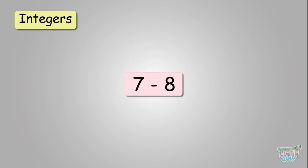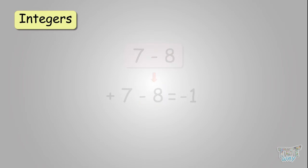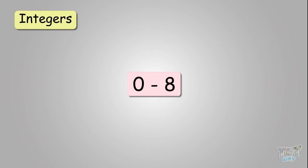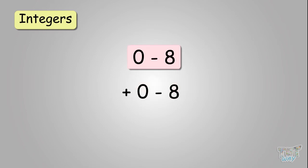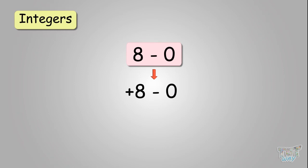Seven minus eight — this is positive seven minus eight. Now let's do zero minus eight. Again, you have two opposite signs; it is positive zero minus eight. You will be doing subtraction. The answer will be eight, but it will be negative. Now eight minus zero — again, opposite signs: plus eight minus zero. You'll be doing subtraction, and the answer will get the sign of the larger number, which is positive. So the answer is eight.